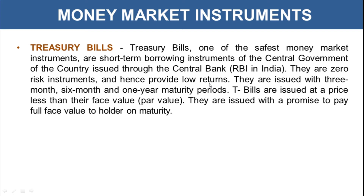As you know, if the risk involved is less, the returns provided will also be less. Treasury bills are issued with three months, six months, and one year maturity periods. T-bills are issued at a price less than their face value, which is called par value. They are issued to investors with a promise to pay the full face value to the holder on maturity. So investors purchase T-bills at a discounted price and receive full face value at maturity.